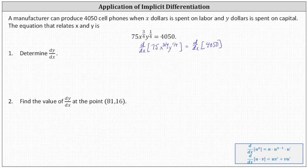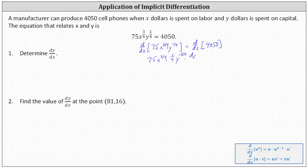Applying the product rule on the left side, we have the first function 75x to the three-fourths times the derivative of y to the one-fourth with respect to x, which requires the chain rule because we're treating y as a function of x. So we first differentiate with respect to y, which gives us one-fourth times y to the power of negative three-fourths, and then multiply by dy/dx.